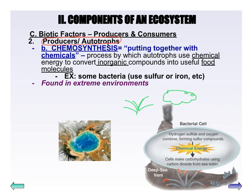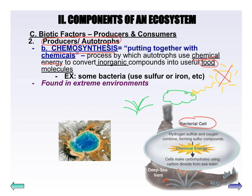Now usually these autotrophs, these producers, use energy from the sun. So they use sunlight, and they also get CO2 and water, and they convert that into a sugar — that's using photosynthesis. Not all of them do that. Some autotrophs or producers use what's called chemosynthesis, which is basically the same thing — they're making their own food — but they're not going to use the sun. These organisms, usually bacteria, use the energy from chemicals in order to make their food molecules, the sugar. So chemosynthesis uses chemical energy, where photosynthesis uses energy from the sun.